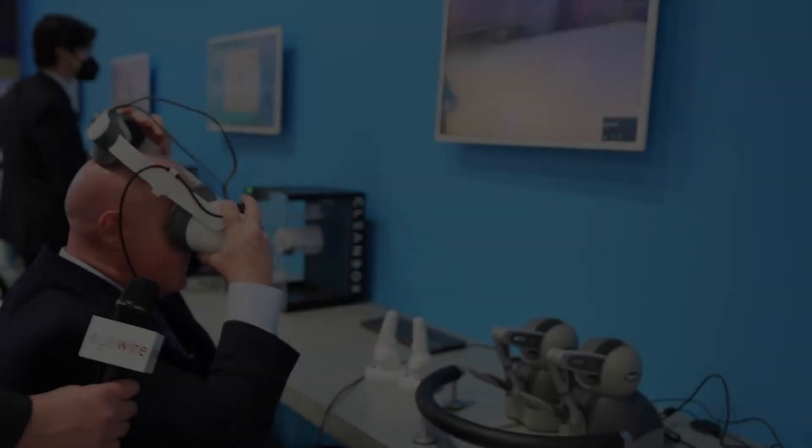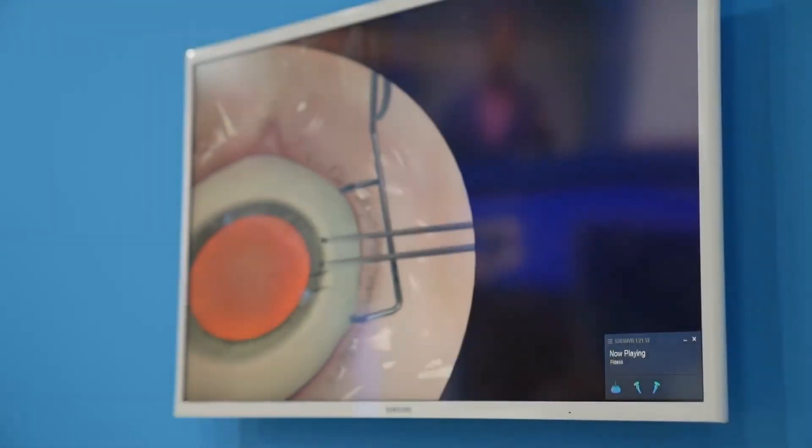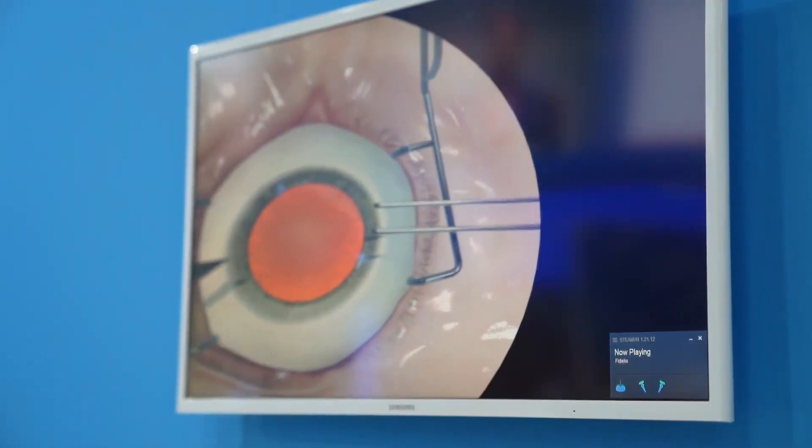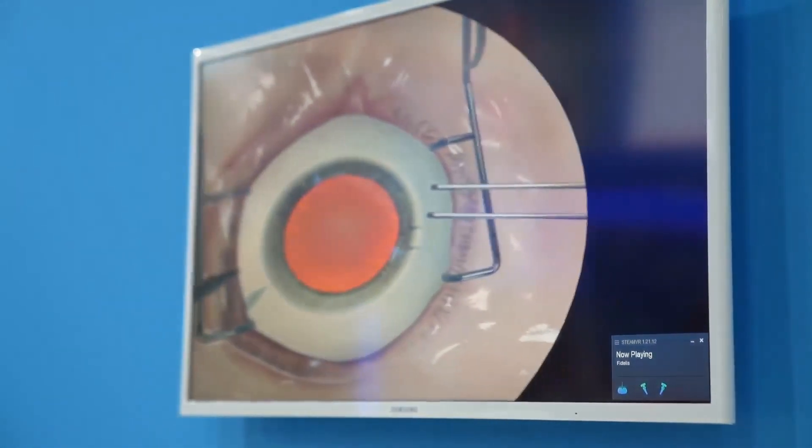When you enter the surgical simulator, you'll initially be in a virtual OR. Within Fidelis, we've broken it up into 11 basic steps. The first step being creating the paracentesis or side port incision.